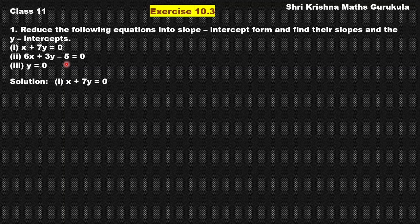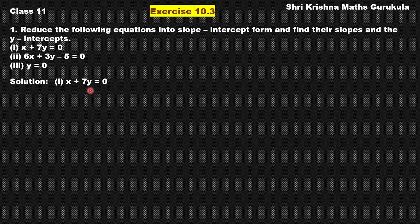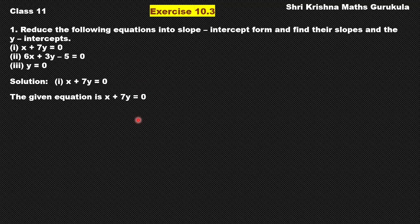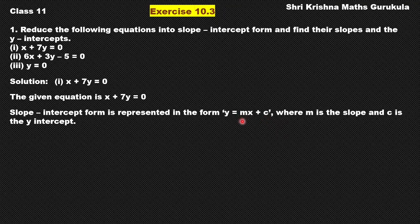Let us consider the very first equation: x plus 7y is equal to 0. If you check this equation, the constant term here is 0. We have an x term and a y term; the constant term is 0. Now we will write the slope-intercept form. That form is y equals mx plus c, where m is the slope of the line and c is the y-intercept.